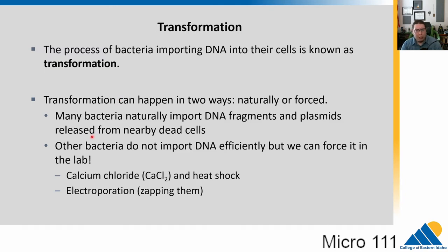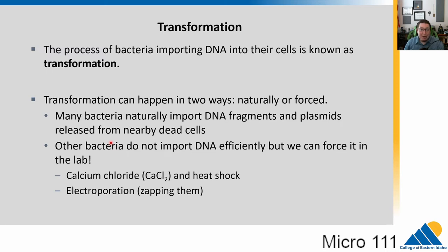Some bacteria don't do this very well and we have to coax them in the lab. Transformation is very important — as we saw in biotechnology, we talked about carrying genes on plasmids and moving them around, like making human insulin in E. coli. To do that, we put the human insulin gene on a plasmid and then transform the E. coli. There are two ways: you can use calcium chloride, which makes the cell membrane more permeable, and then apply a heat shock.